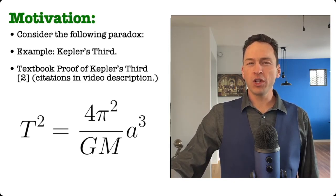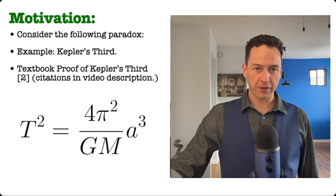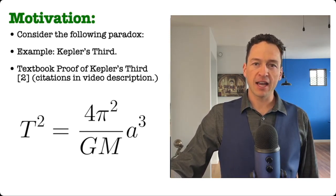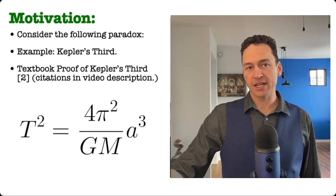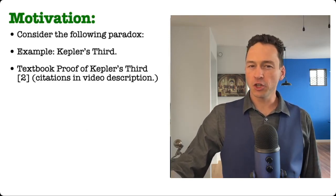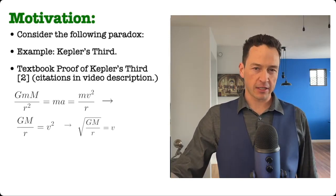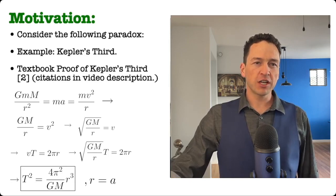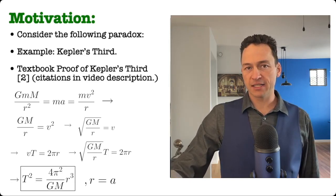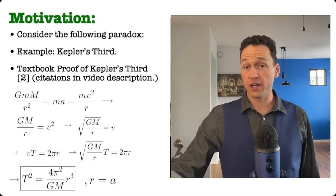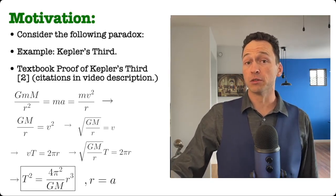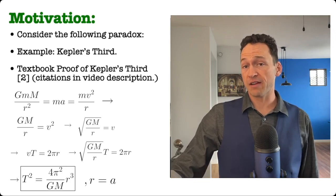Now if one looks for a proof of Kepler's third, you will often find a deduction from universal gravitation. That deduction looks like this. If you're interested in reviewing this deduction, you can pause the video and go over it. But to get the main idea, you just have to remember that Kepler's third is deducible from Newton's principle of gravitation.